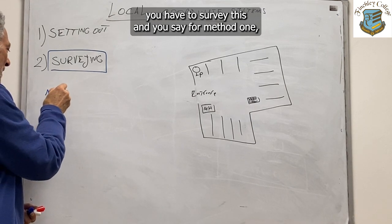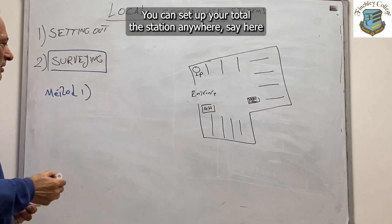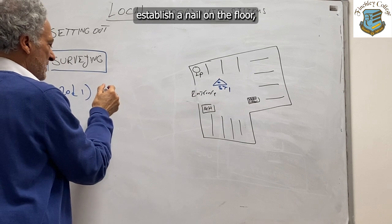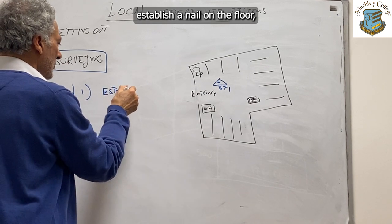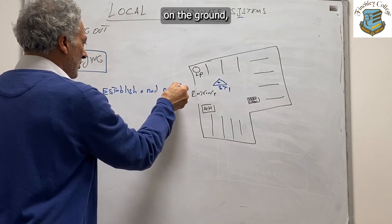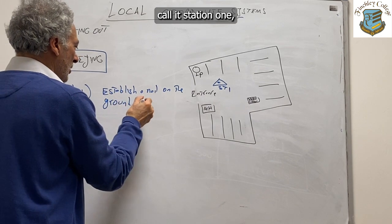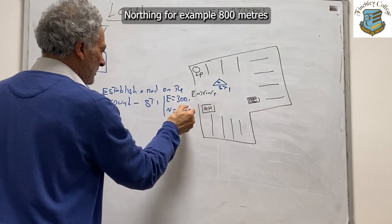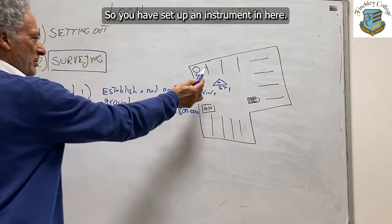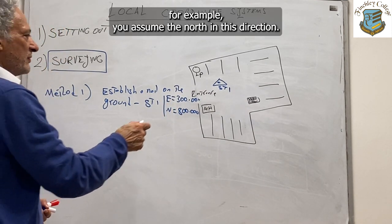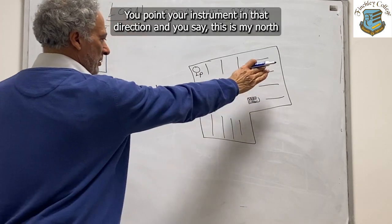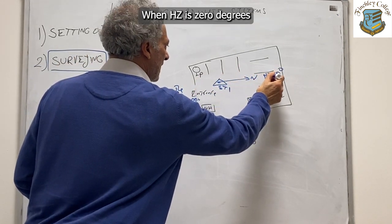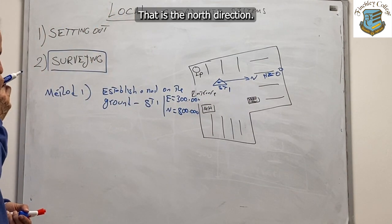Method one is the easiest. You set up your total station anywhere — say here — and call this point Station 1. Establish a nail on the ground, call it Station 1, and give it a coordinate: easting 300 meters, northing 800 meters, for example. You give the instrument your station coordinate and then you assume north is in a particular direction. You point your instrument in that direction and say this is my north — so when the horizontal angle Hz is 0 degrees, that is the north direction.